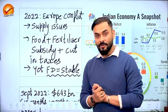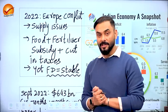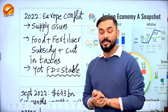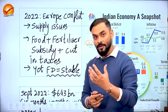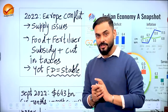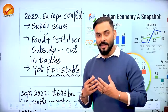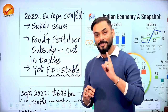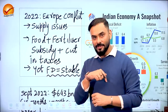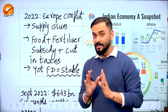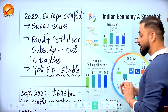On one hand, oil, natural gas, and metals became costly; on the other, the government was reducing taxes. So government spending increased while tax revenues fell. Despite this tight situation, India's fiscal deficit has been decent and stable at around 6.4%, according to the Economic Survey.